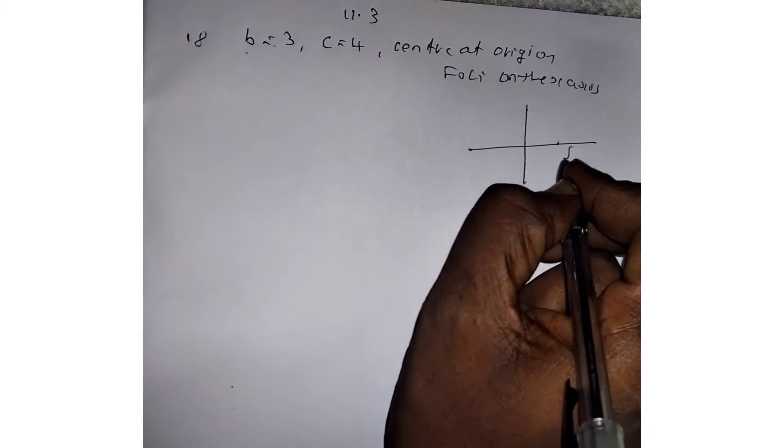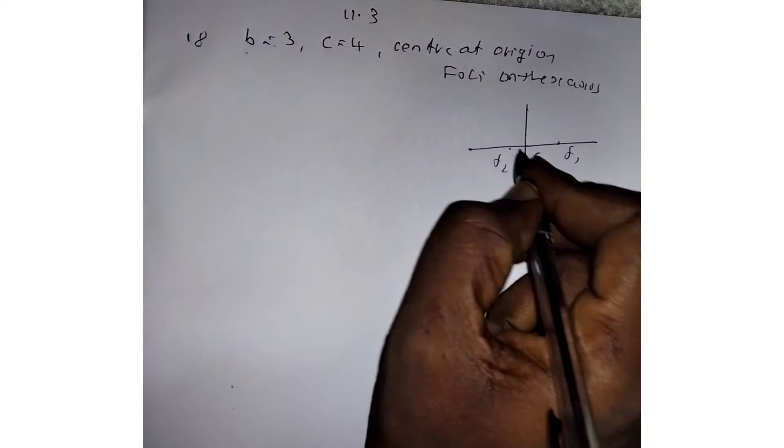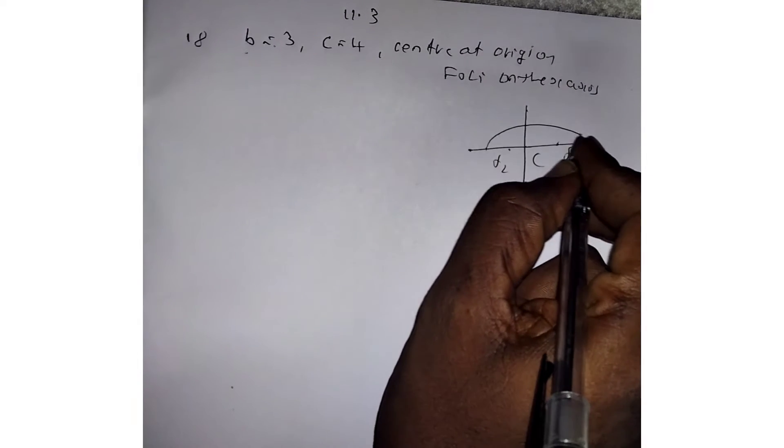For example, if you take foci F1 and F2 on the x-axis with center at the origin, the diagram will pass through like this.